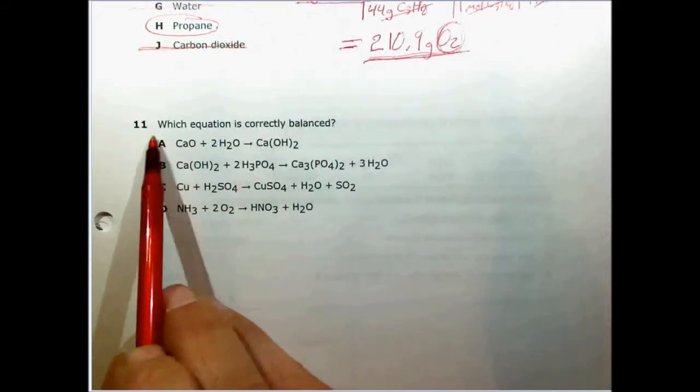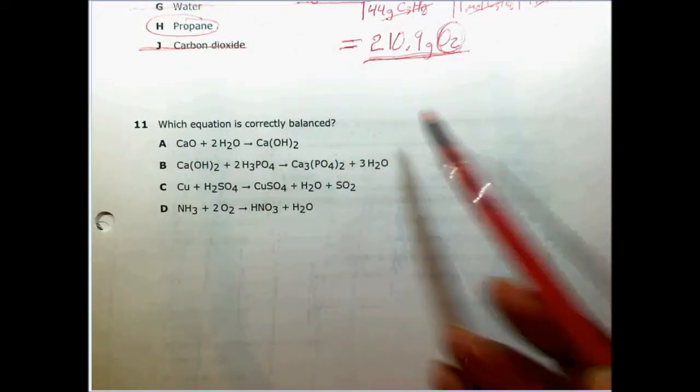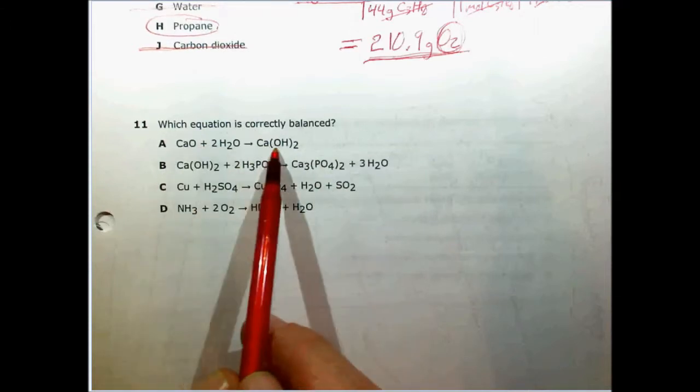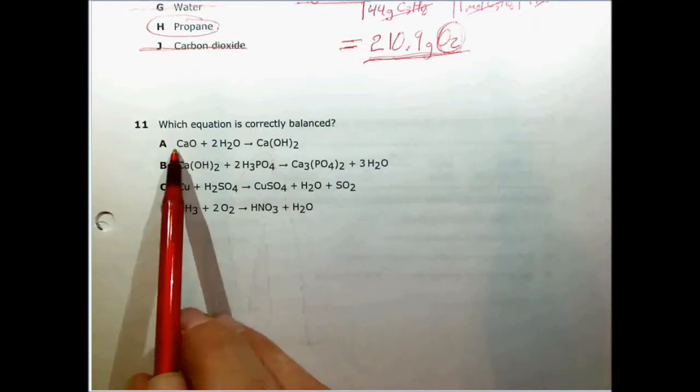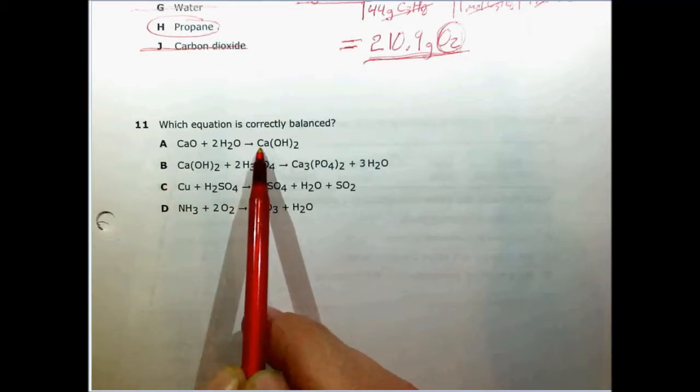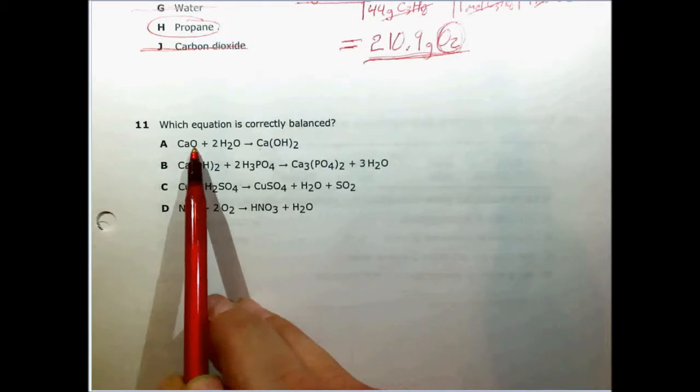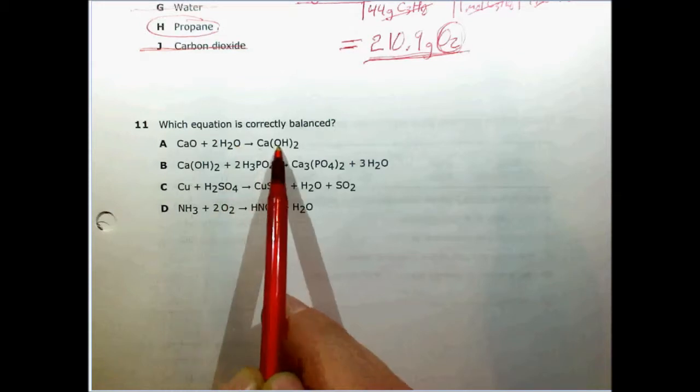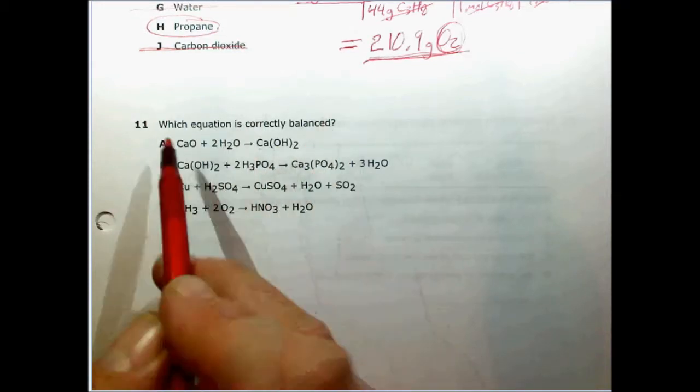Okay, let's continue. Which equation is correctly balanced? Well, all we have to do is go through and count the number of atoms of each kind on each side of the equation. We have one calcium atom here and one calcium atom here, so we're good here. We have one oxygen plus two times one, two more, so that's a total of three oxygens on this side. We only have two here, so it can't be this one.